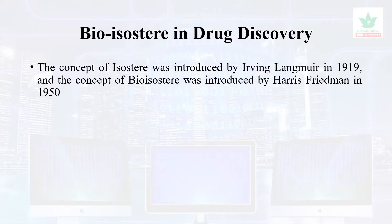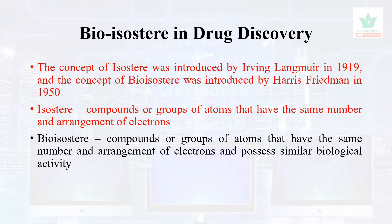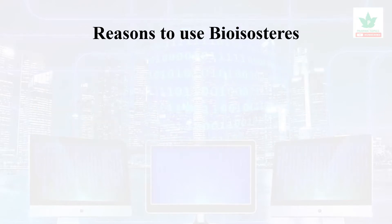This was further extended as bioisosterism by Harris Friedman in the year 1950. Isosteres are compounds or groups of atoms which have the same arrangement of electrons. Bioisosteres are compounds or functional groups which have a similar number of electronic arrangements and possess similar biological activity.